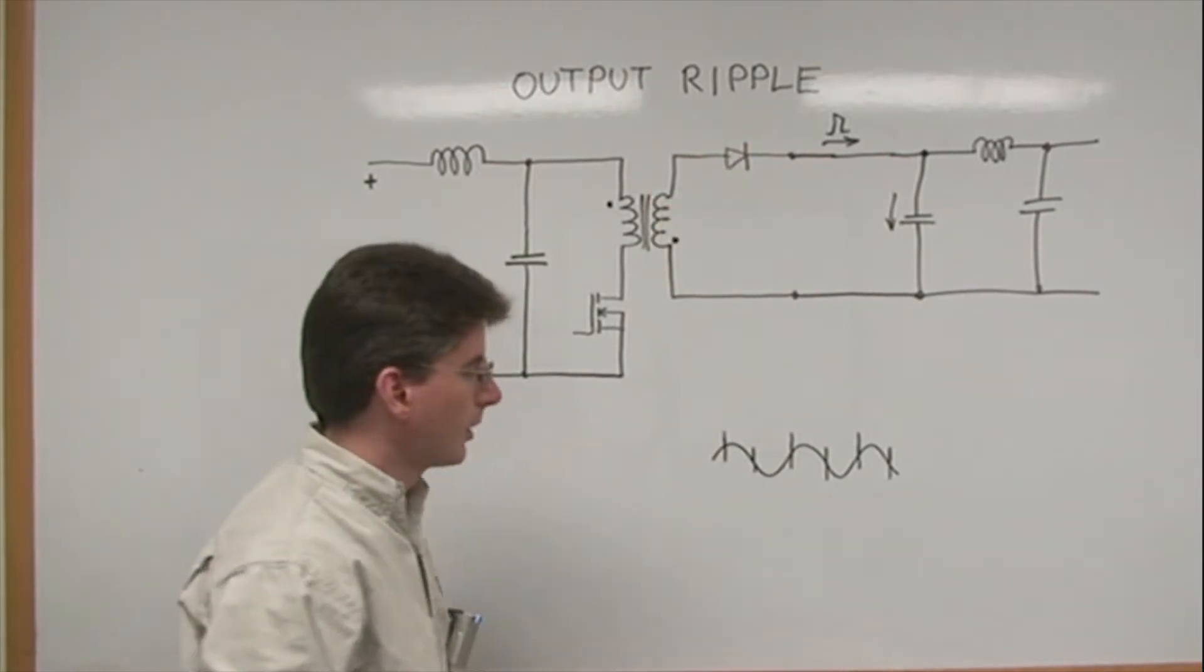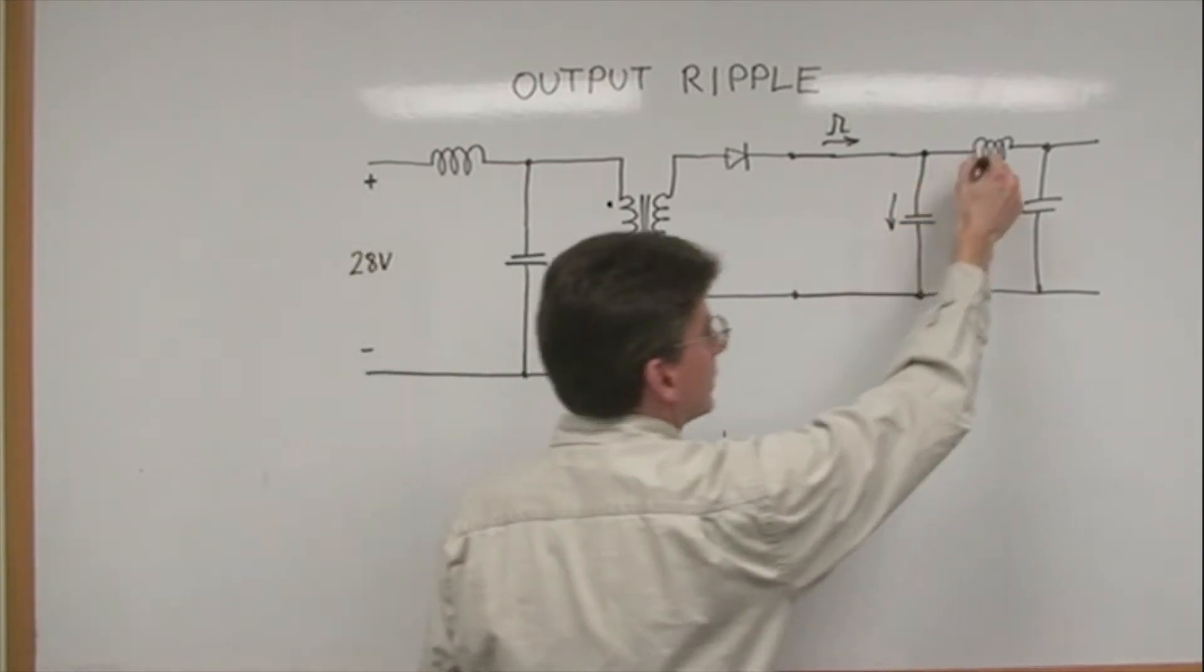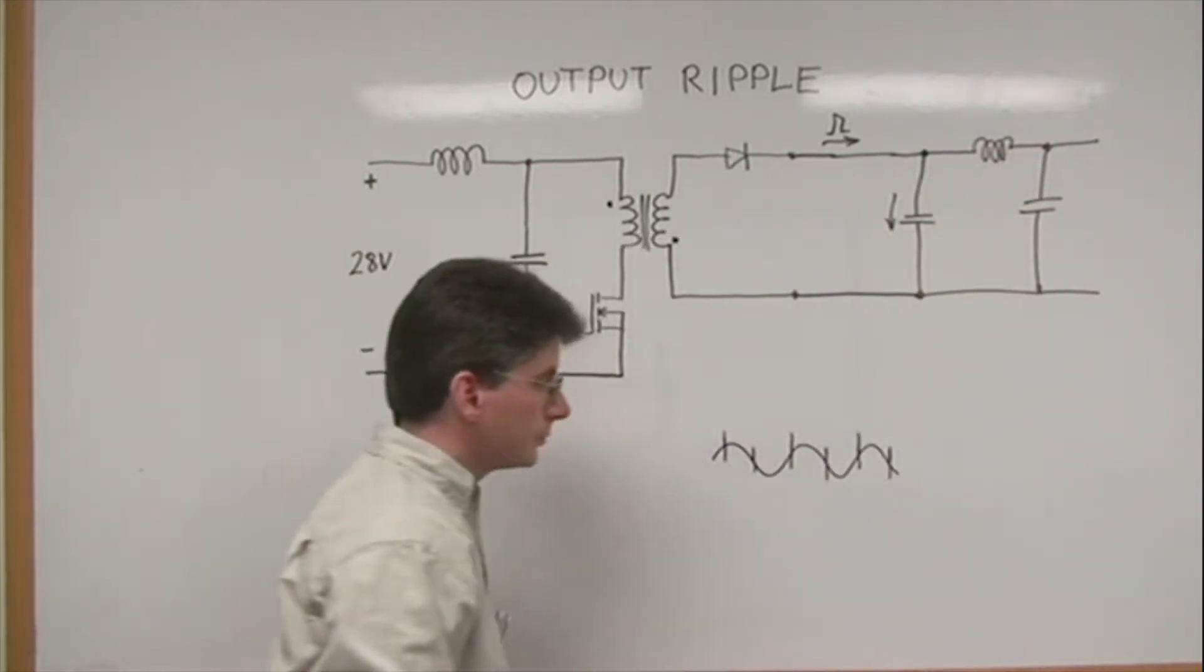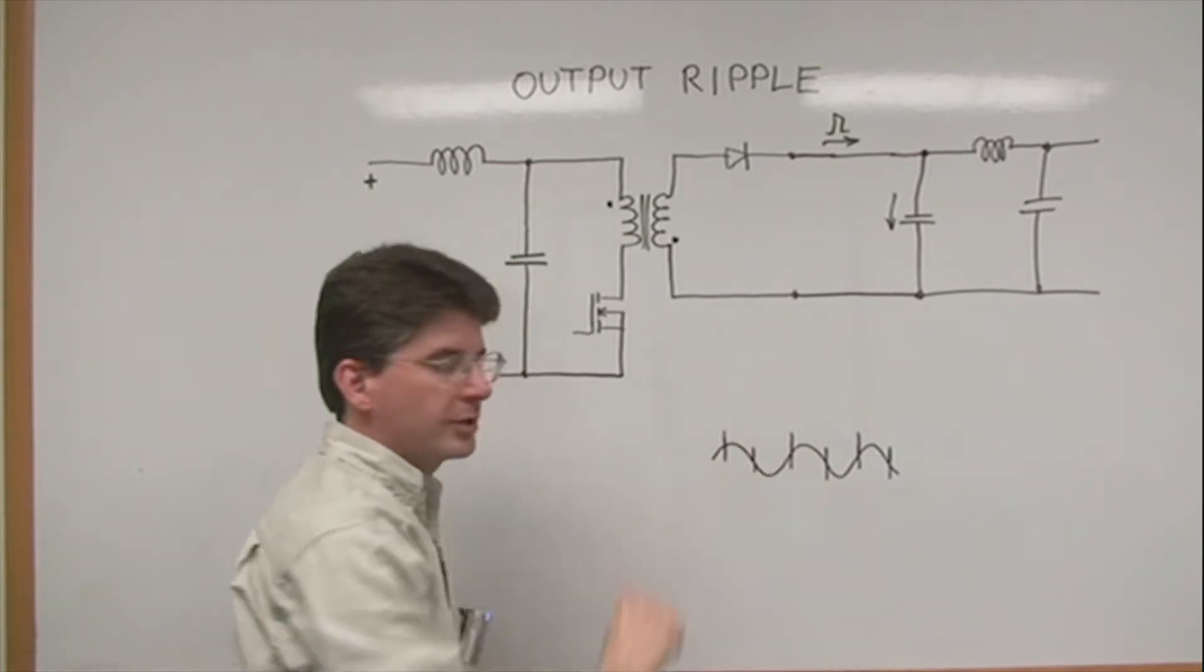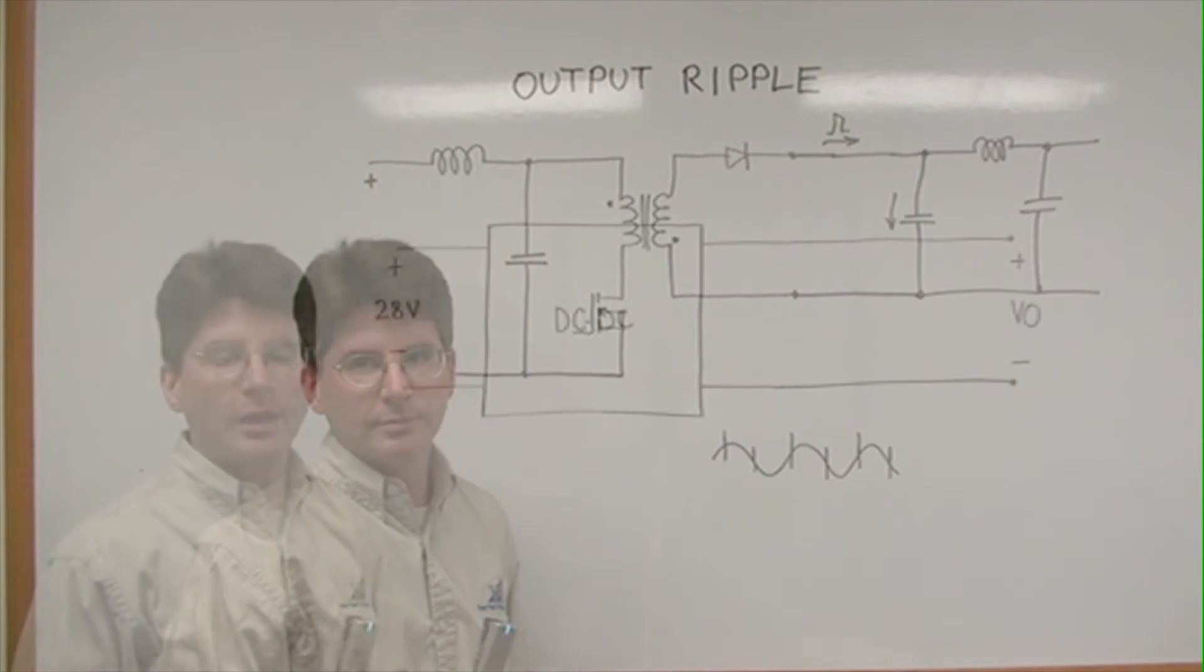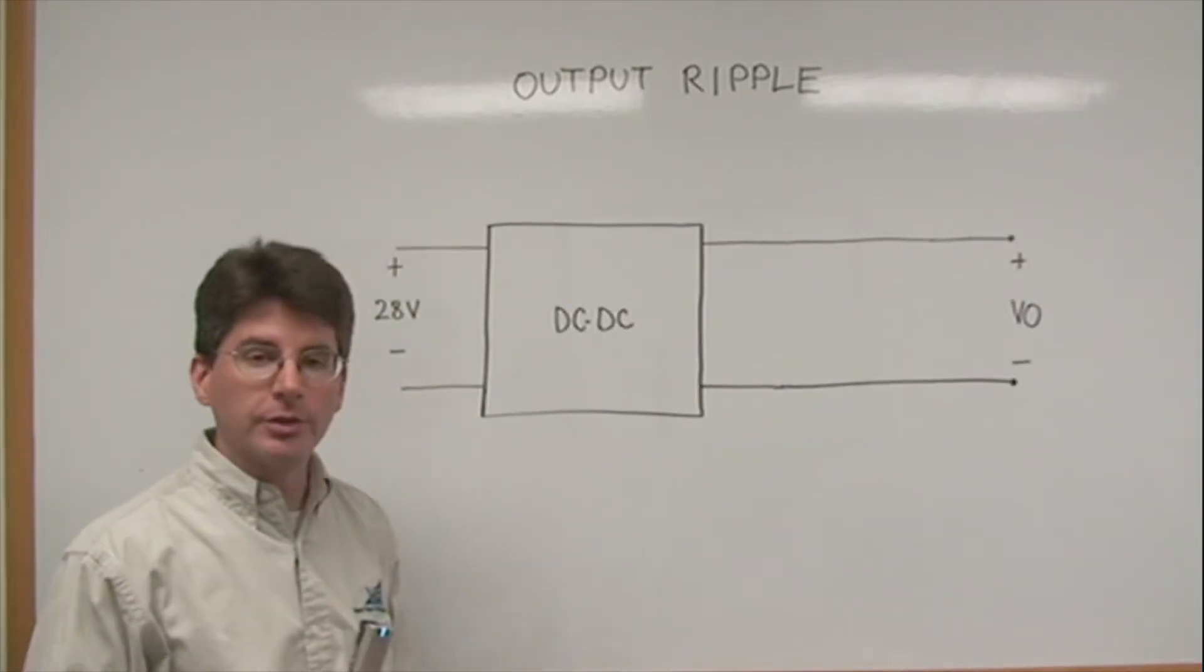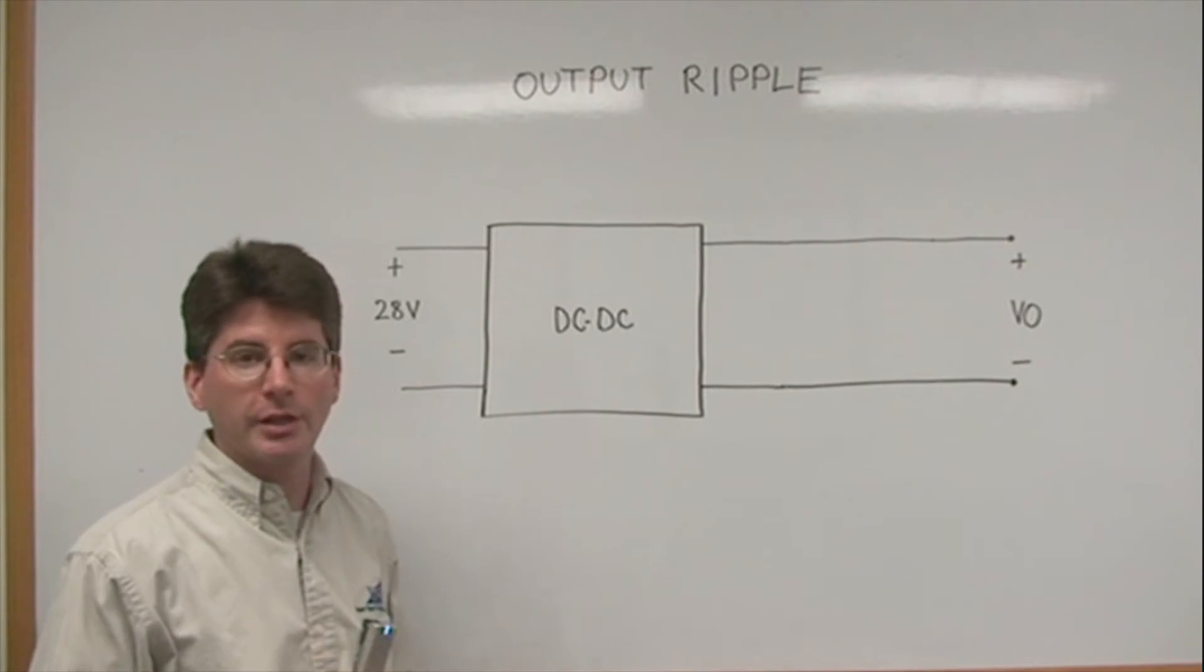It will also include some higher frequency switching spikes due to switching events occurring on the diodes and rectifiers. All this needs to be filtered and is filtered by this LC here. But this is an approximation of the waveform you might see at the output of the converter.